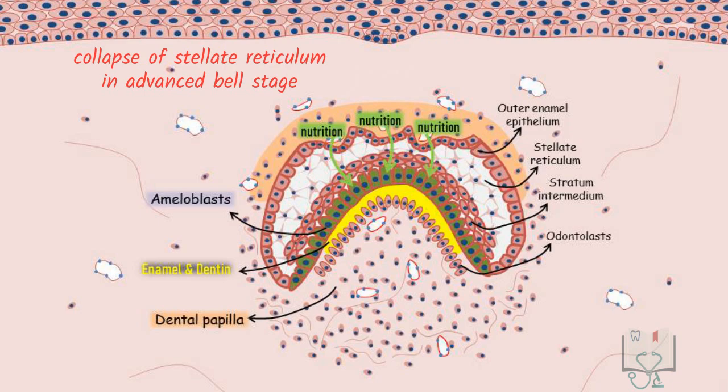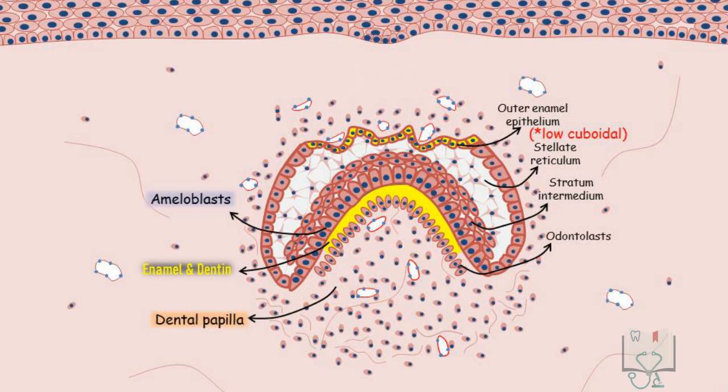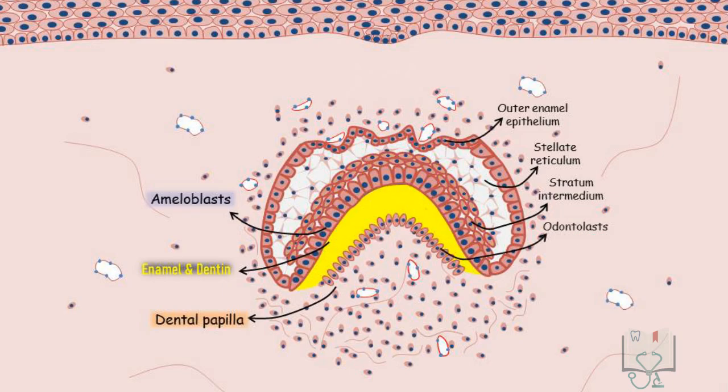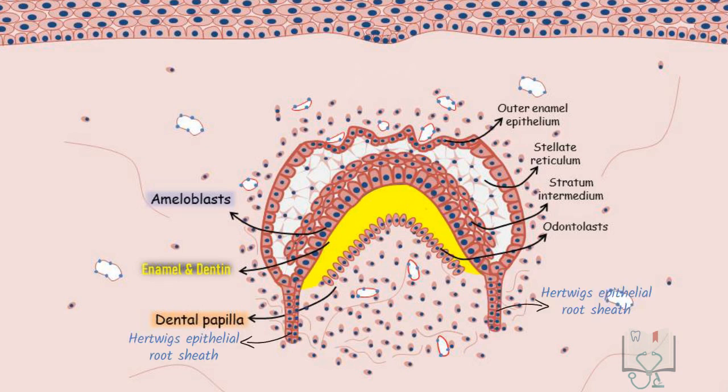That is why we see the collapse of stellate reticulum in the advanced bell stage. The cells of the outer enamel epithelium become low columnar in shape, however the stratum intermedium appears the same, formed of squamous cells. Once enamel and dentine formation reaches the cervical loop, or the future cemento-enamel junction, Hertwig's epithelial root sheath develops to initiate root formation.